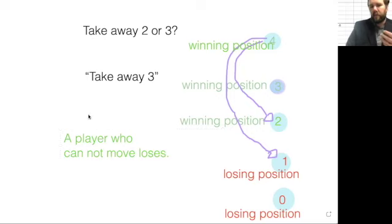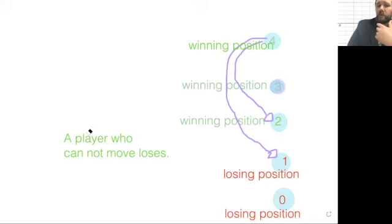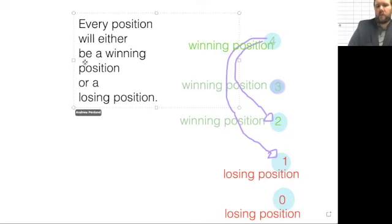If you have these three properties, then you can do some things here. You can create a directed graph for the positions of the game. And every position will either be a winning position or a losing position, right?